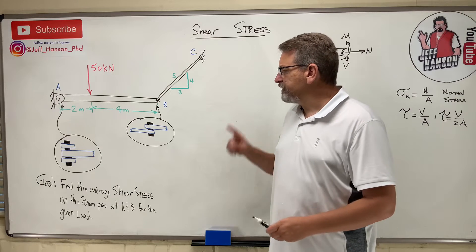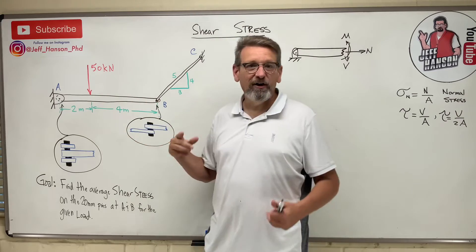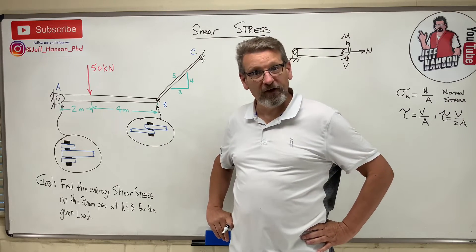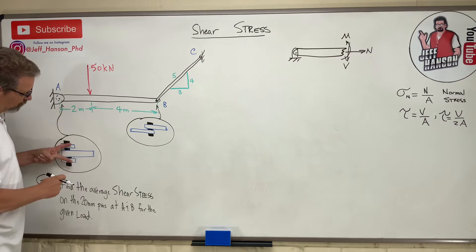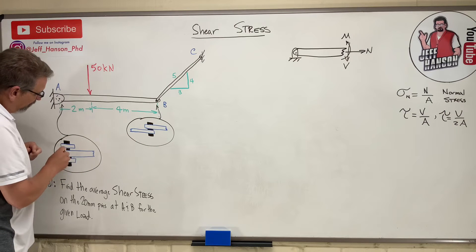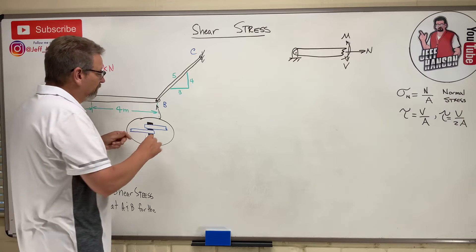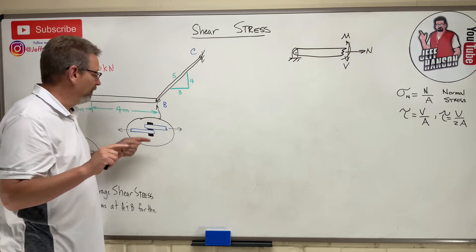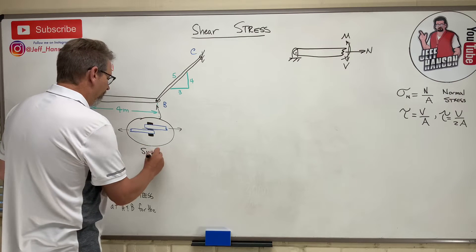Let's look at a problem. Find the shear stress on the 20-millimeter pins at A and B. We have pin connections at both points. In statics a pin was just a pin, but in solids you need to know: is it single or double shear? In double shear, there are two shear planes — you'd have to tear through here and through there. In single shear, you only have to shear through once to make it fail.